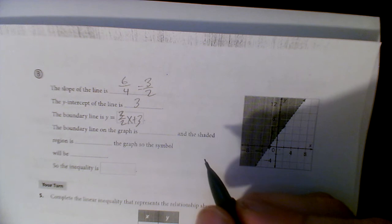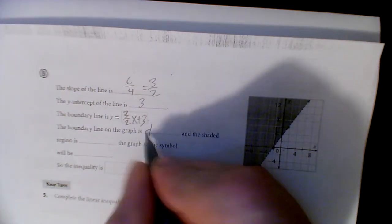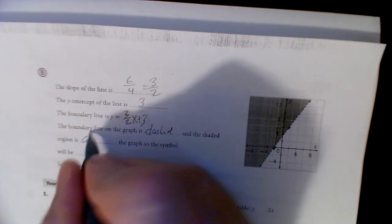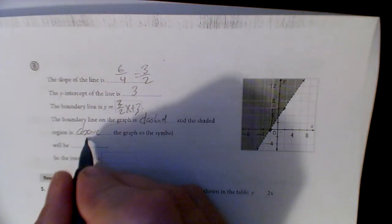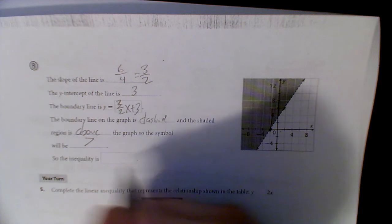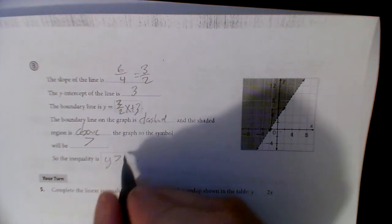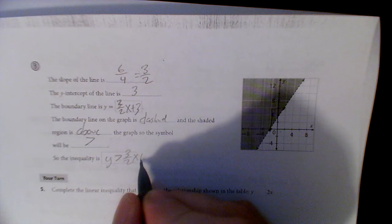The boundary line on the graph is dashed and the region above is shaded, so we're going to use the greater than symbol. So the inequality is y is greater than - not greater than or equal to because it's a dashed line - three halves x plus three.